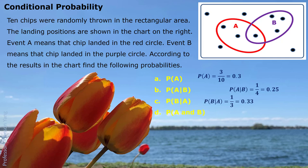Part D: P(A and B). We are looking for the chance the chip landed in both the red circle and the purple circle. When we look at the result, we have only 1 chip in that situation. We have no condition here, so we consider all 10 chips total, and only 1 belongs to both circles. So P(A and B) is 1 out of 10, which is 10% or 0.1.